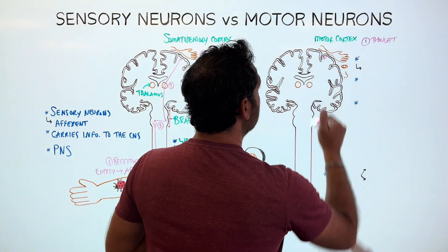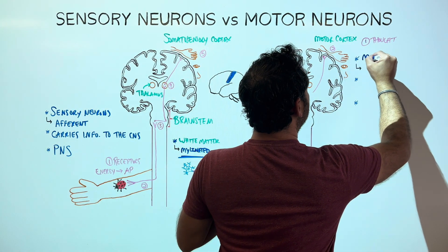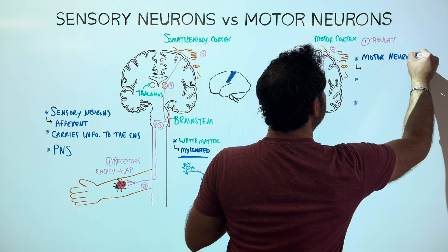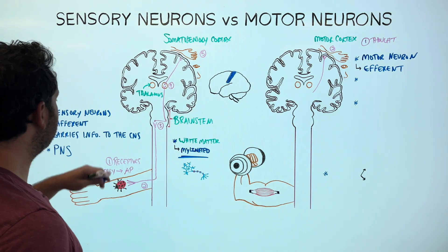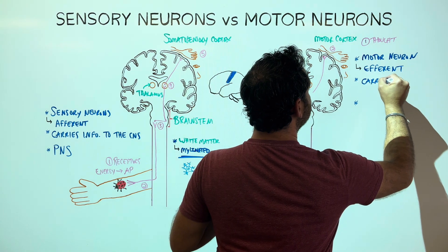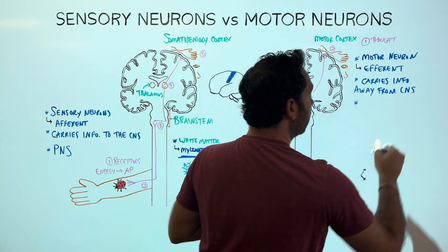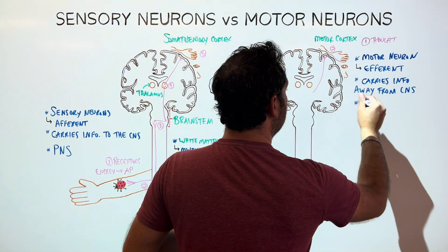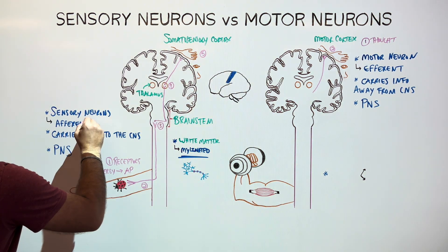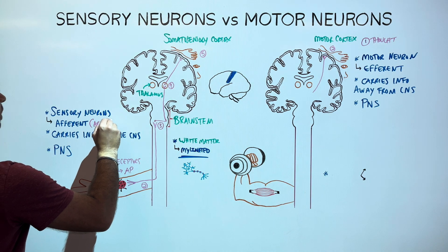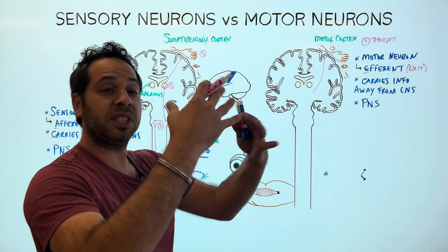Step two: the motor neuron takes that information away from the brain. Motor neurons are also called efferent neurons — they carry information away from the central nervous system, to our muscles and glands, primarily located in our peripheral nervous system. Here's the memory technique: afferent arrives at the brain (it ascends), while efferent exits the brain.